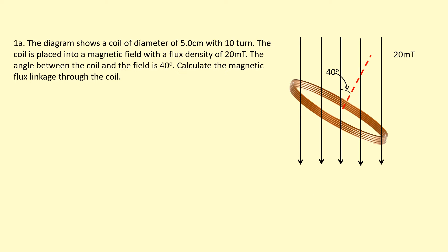Here's an example: the diagram shows a coil of diameter 5 centimetres with 10 turns. The coil is placed in a magnetic field with a flux density of 20 milli-Teslas. The angle between the coil and the field is 40 degrees. Calculate the magnetic flux linkage through the coil.